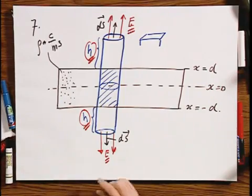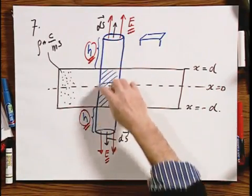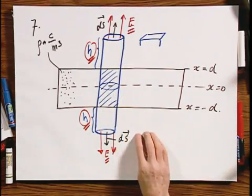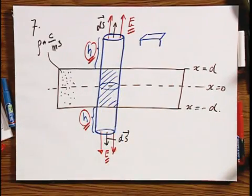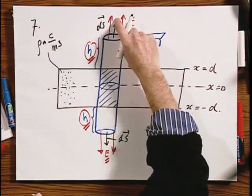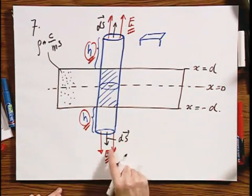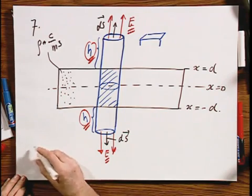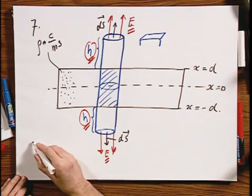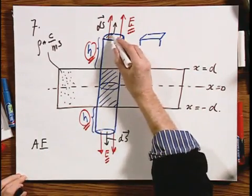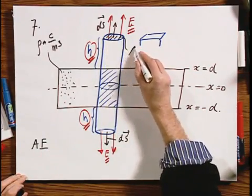What now is the electric flux that is escaping from this cylinder? Well, the electric flux escaping here is the same as the electric flux escaping here, because ds and E are both in the same direction. So I get A times E, if A is this surface area.